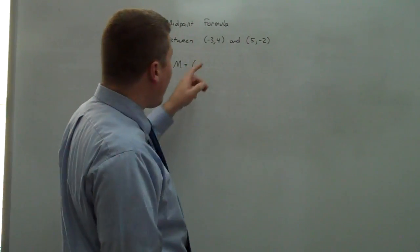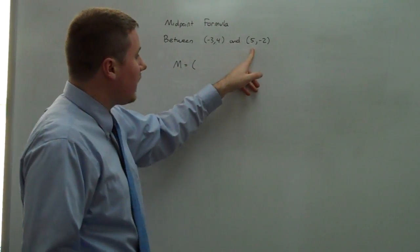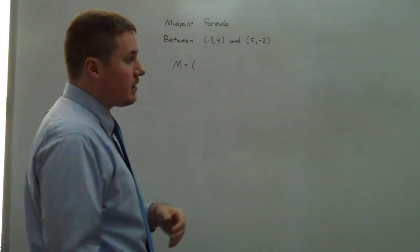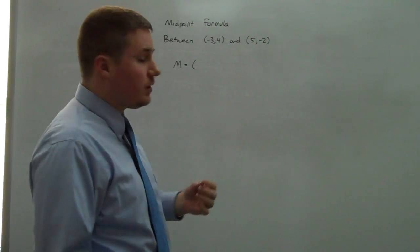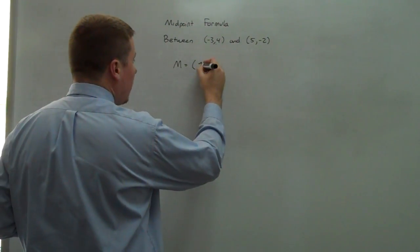So the midpoint is going to be the average of negative 3 and 5. Negative 3 plus 5 is 2. 2 divided by 2 is 1.